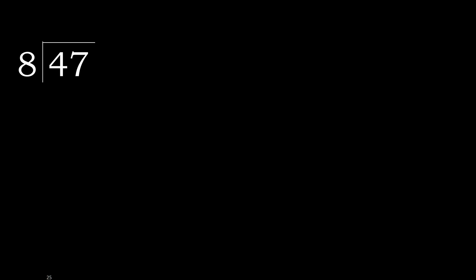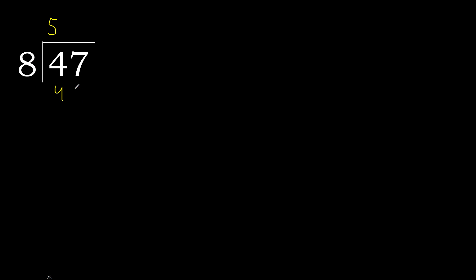47 divided by 8. 4 is less, therefore next. 47 is not less, therefore with 47, 8 multiplied by which number is nearest to 47 but not greater? 8 multiplied by 6 is greater, multiplied by 5 — 40 is not greater. Subtract: remainder is 7.